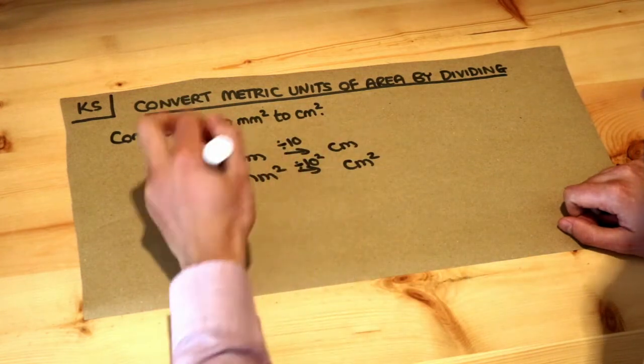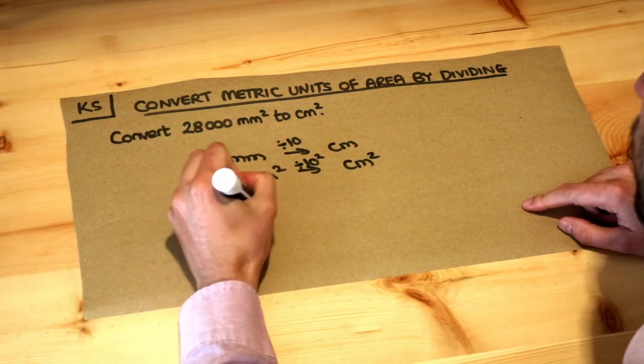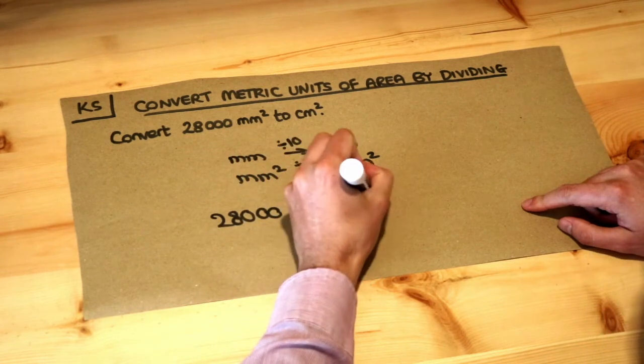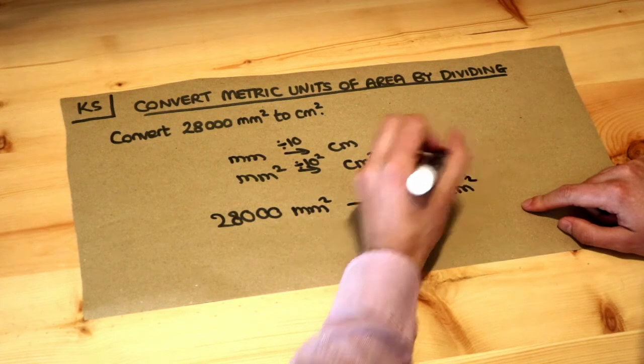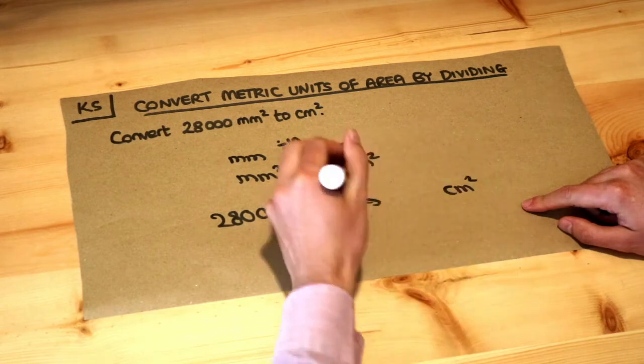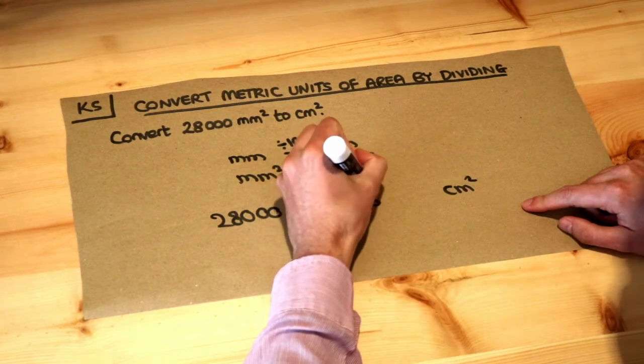So let's apply this principle. We want to go from 28,000 millimetres squared to centimetres squared. To get from millimetres to centimetres, we divide by 10. So to get from millimetres squared to centimetres squared, we divide by 10 squared.